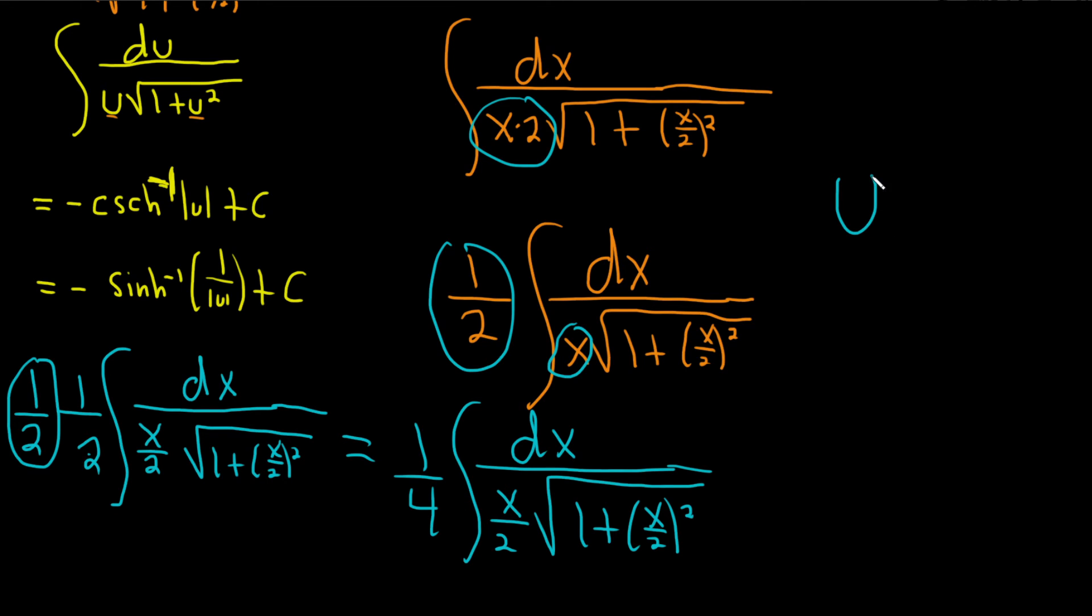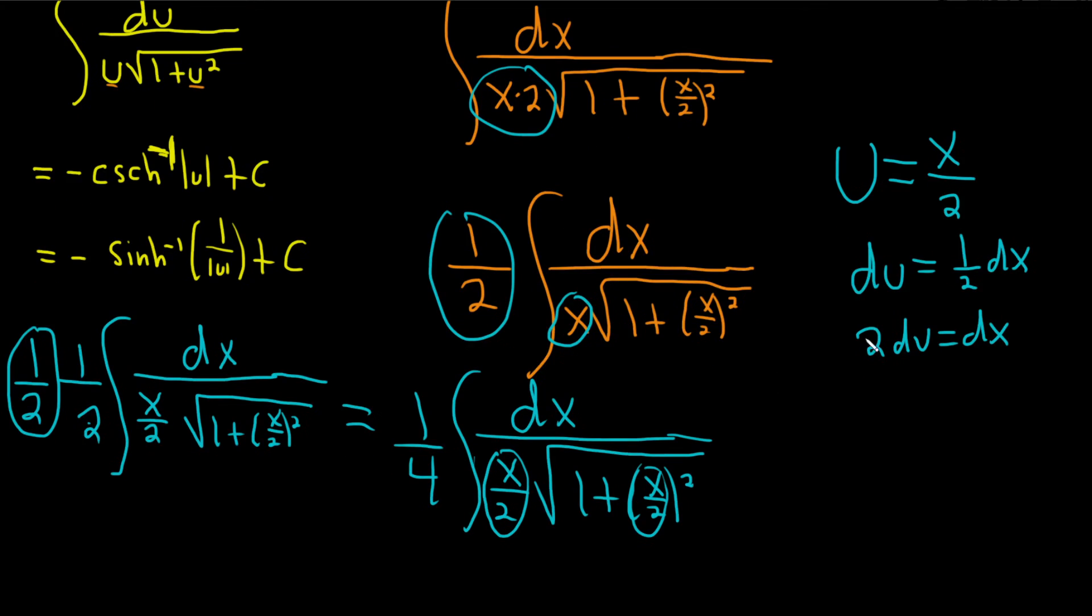Now we can make our substitution. u is equal to x over 2. du, well, the derivative of x is 1, so we just get 1 half dx. 1 half dx. And remember, this is going to be our u, and so is this right here. So we don't have a 1 half here. So let's multiply both sides by 2. So 2 du is equal to dx. And now let's make our substitution.